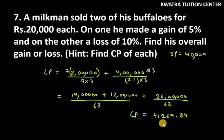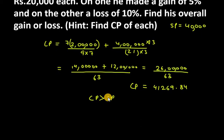So this is cost price. Now you can see that our selling price was Rs. 40,000 and cost price is Rs. 41,269.84. This means the cost price is bigger as compared to the selling price, so overall there is a loss.